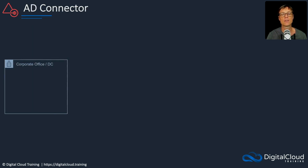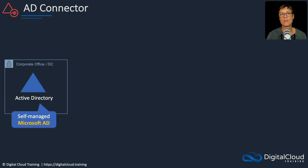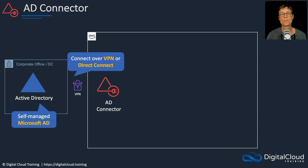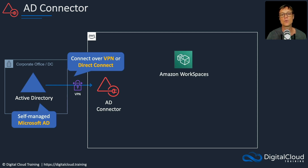Next, we have the AD Connector. This is useful where you have an existing Active Directory in your on-premises environment — a corporate office or data center running a self-managed Microsoft AD — and you want to connect it to the cloud. We use a VPN or Direct Connect connection and the AD Connector in the AWS cloud, which connects your on-premises Active Directory into AWS.